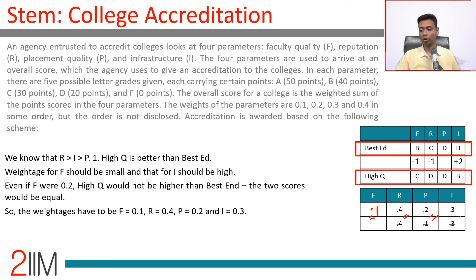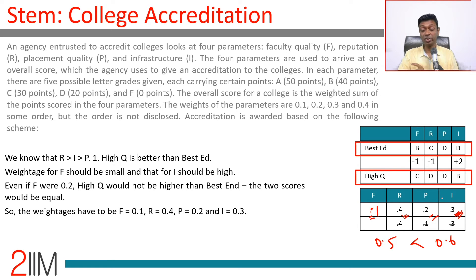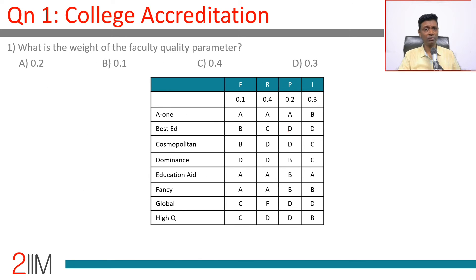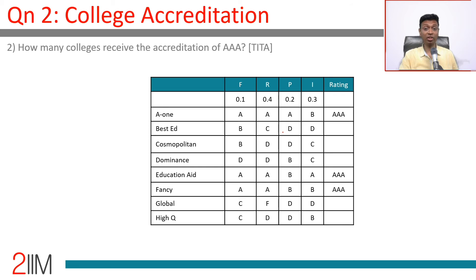With F = 0.1, R = 0.4, P = 0.2, I = 0.3: R + F = 0.5 and 2×I = 0.6, so High Q's advantage in I clearly offsets Bested's gains in F and R. These are the weightages. The question asks for the weight of the faculty quality parameter — that is F = 0.1. Very straightforward once the weightages are found.